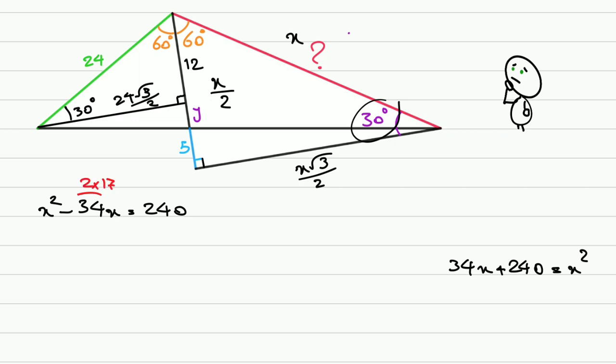This is 2 times 17, so we can add 17 squared to both sides to have a complete square. It'll be x squared minus 34 times x plus 289 on the left side, 240 plus 289 on the right side.